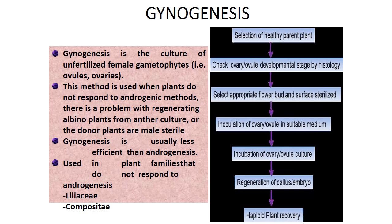The pathway of gynogenesis: first, selection of a healthy parent plant. From there, check ovary or ovule development stage by histology. Select appropriate flower bud and perform surface sterilization. Then inoculate the ovary or ovule in a suitable medium, incubate, regenerate callus or embryo, and recover haploid plants.